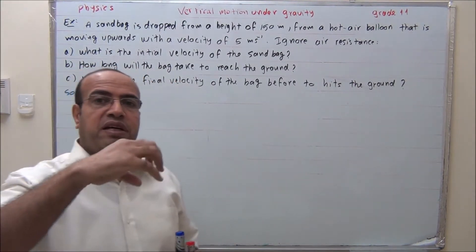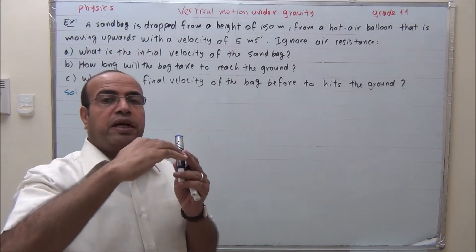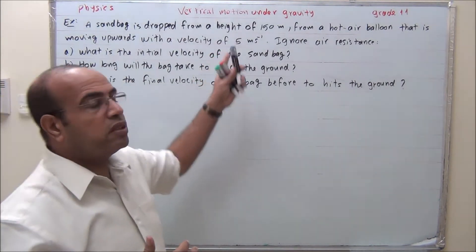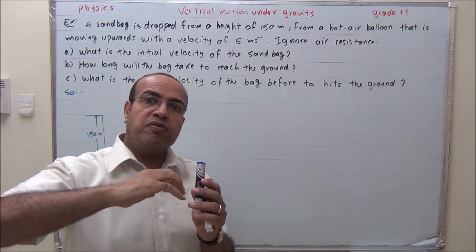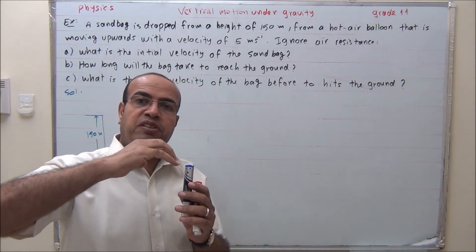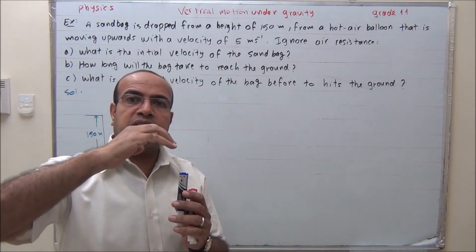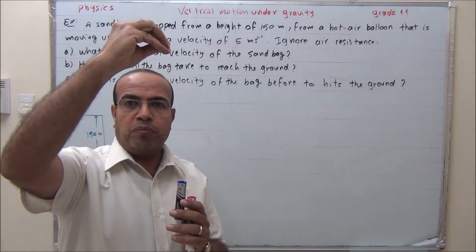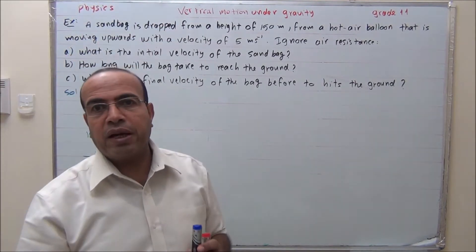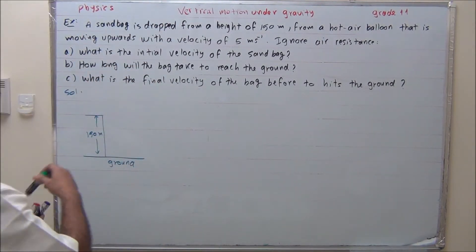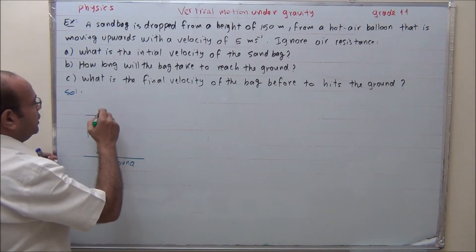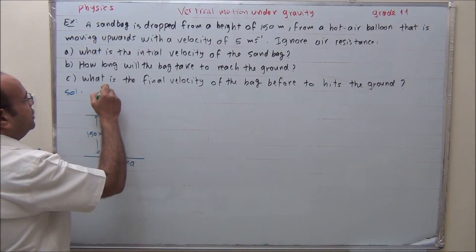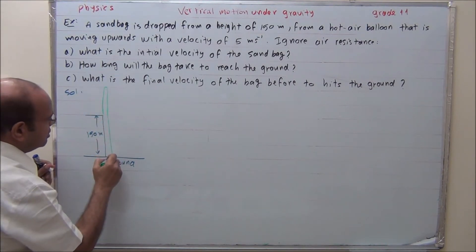What will happen when the sandbag is dropped? The initial velocity will not be zero — it takes the same velocity as the hot air balloon. So it starts moving upward at 5 m/s, then the velocity decreases gradually from 5 to 4 to 3 to 1 to 0, stops, and then returns back to the ground. This is the motion of the sandbag: from this point it moves up, and at the maximum height it returns back.